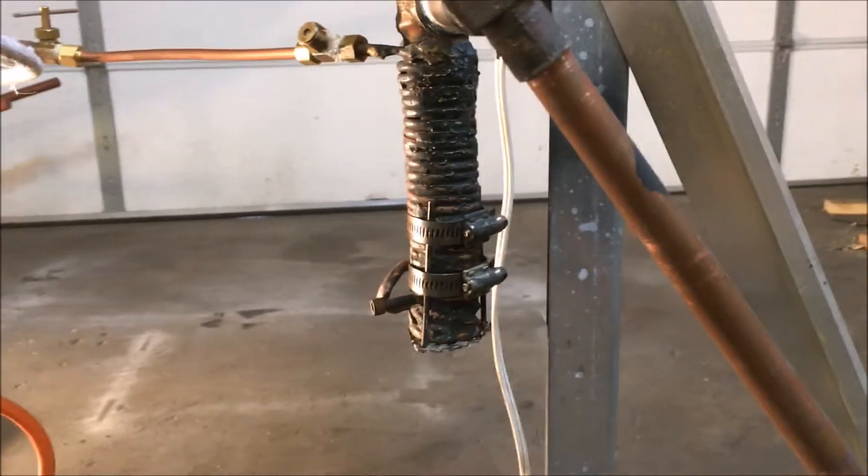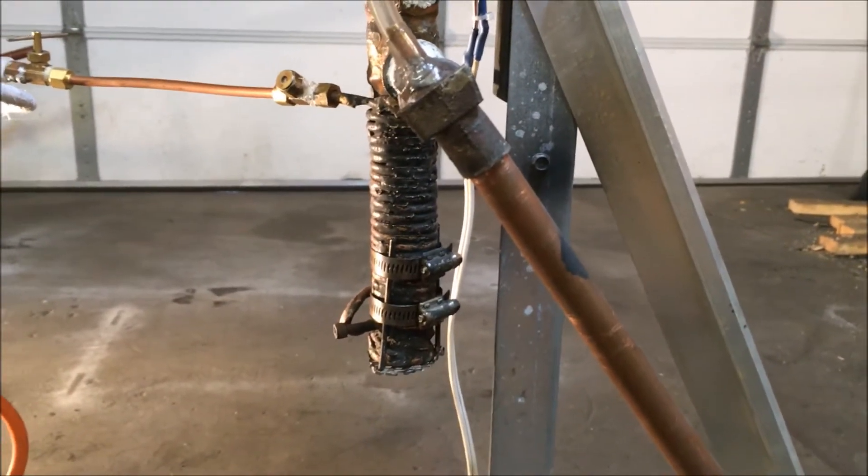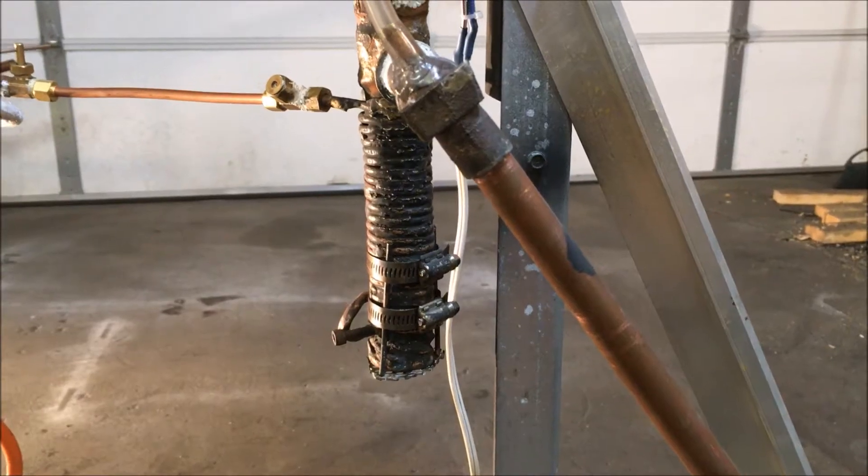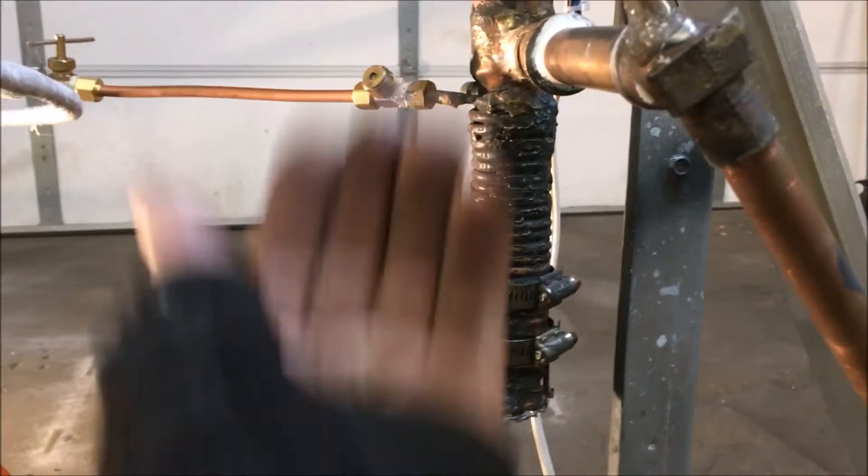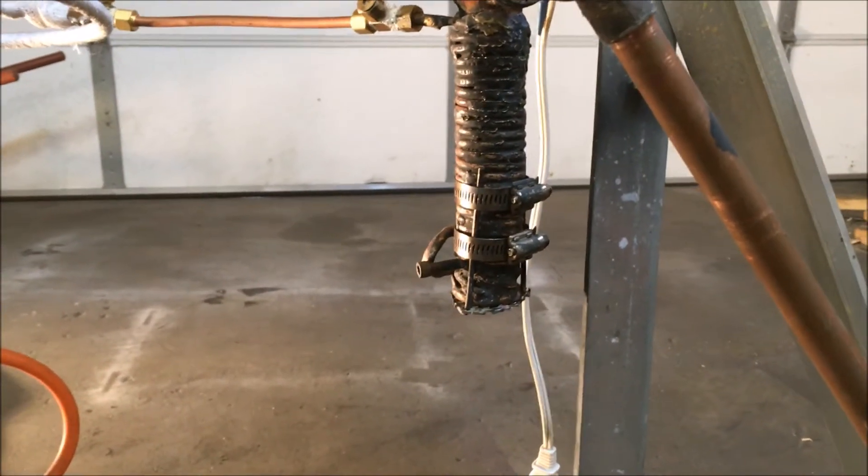Which brings me to another subject: downdraft gasifiers are out. I'm done after this experiment because I've determined that a downdraft gasifier compacts the charcoal bed and restricts flow, whereas an updraft loosens the particles, blows ash out a little bit better, and doesn't clog itself up.